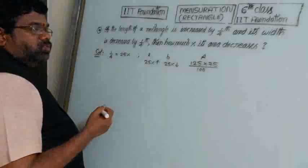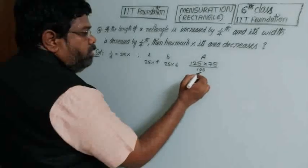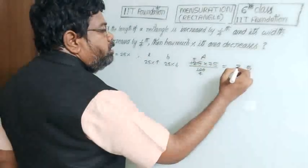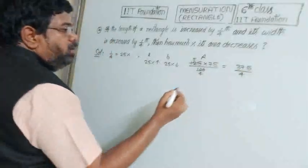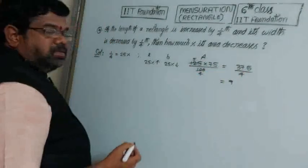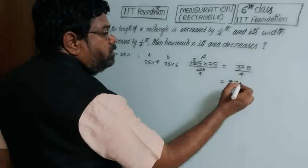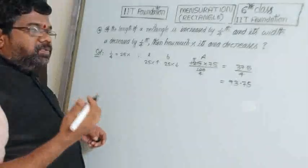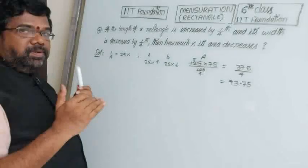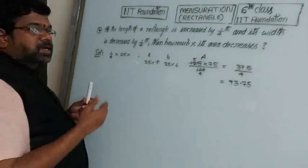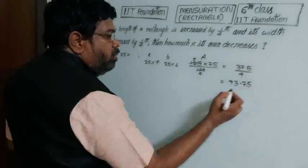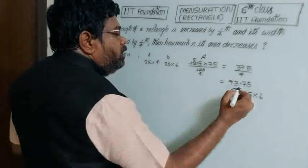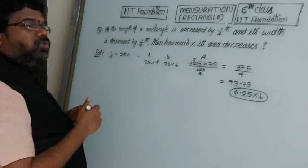Calculate 125 into 75 divided by 100. Cancel: 25 into 5 equals 125; then 75 into 5 divided by 4 gives 375 divided by 4 equals 93.75. The resultant value is 93.75, which is less than 100. How much less? 6.25. So the area decreases by 6.25%.